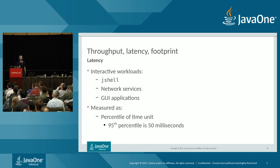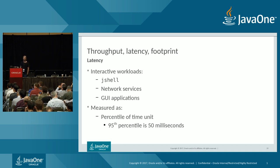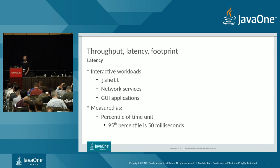Latency matters for interactive workloads. For example, in JShell in JDK 9, you don't want to wait long for an answer — you want immediate responsiveness. Network services and backend web servers also care about request response time. In graphical applications with a frame rate, a long pause causes sluggishness. We measure this as a percentile of a time unit — for example, the 95th percentile is 50 milliseconds, meaning 95% of pauses were shorter than 50 milliseconds.